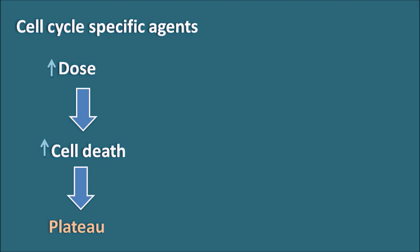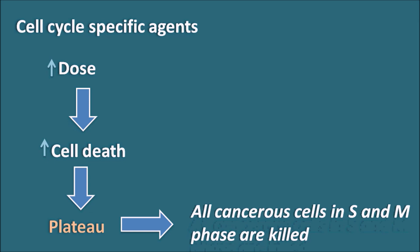Why do we observe the plateau phase? Because these drugs act on a specific phase of the cell cycle. At a high dose, whatever cancerous cells are present in S phase, M phase, G1, and G2 phases are already killed and there are no viable cells within these phases. Cell cycle specific agents can act only on dividing cells but cannot act on already-formed cells. So at a high dose, once all dividing cells are killed, the percentage of cell death will not increase further — we observe a plateau.